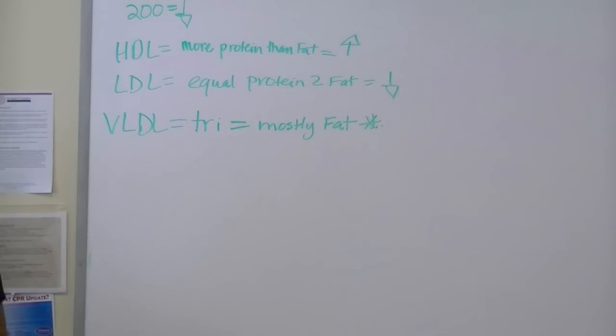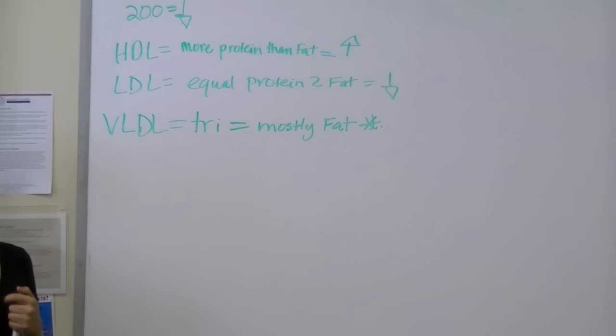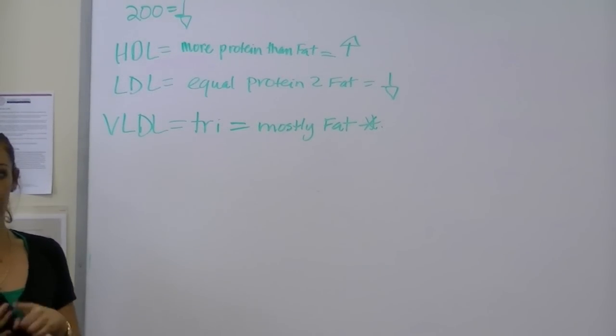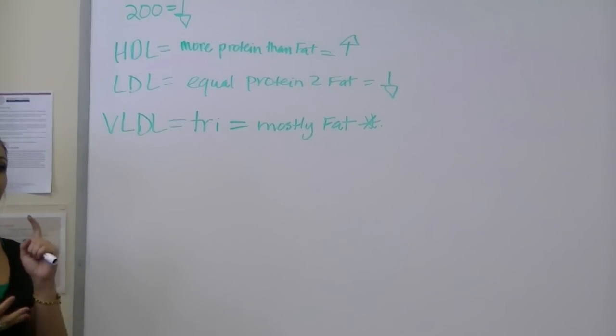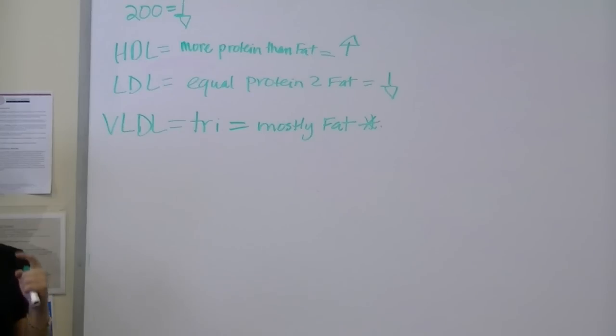Signs and symptoms of right-sided heart failure. We did that already. Those are all the systemic symptoms: anasarca, ascites, hepatomegaly, JVD, systemic hypertension.